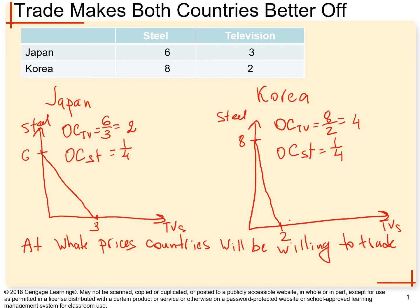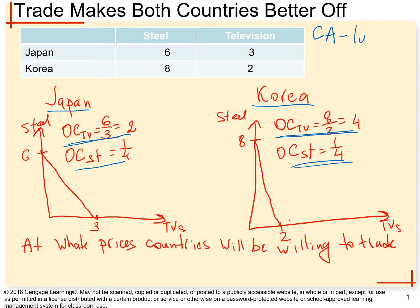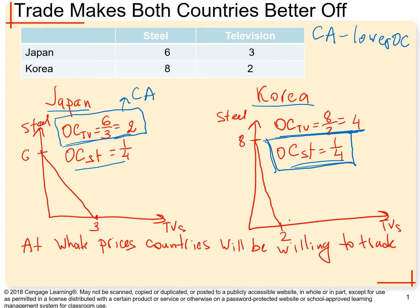In this video we're going to continue our analysis of how trade makes everybody better off. In the previous video we took the example of two countries, Japan and Korea, producing two goods: TVs and steel. We calculated opportunity cost for both countries and introduced the theory of comparative advantage — a country's ability to produce at a lower opportunity cost. Japan has a comparative advantage in TVs and Korea in steel.